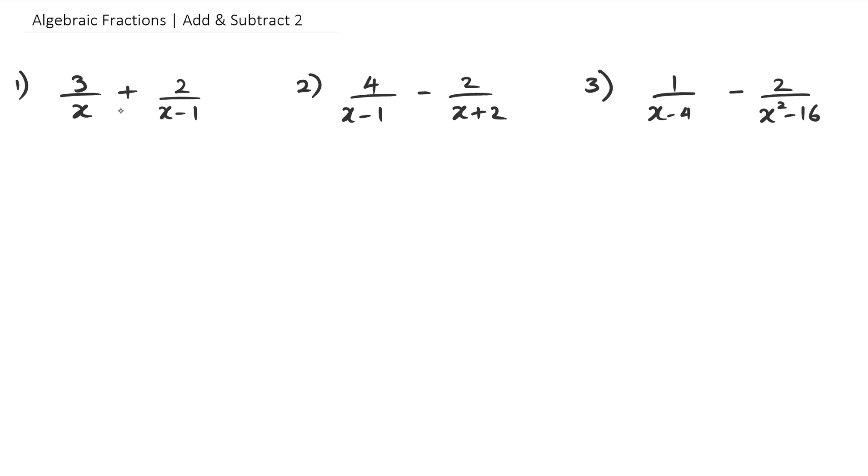So let's get started with question number one here. What we have is we've got 3 over x and 2 over x minus 1. So what I generally tend to do is I write my two numbers together. And because I want to have x minus 1 as a denominator in both fractions, I'm going to multiply the left-hand side in the denominator by x minus 1 and the numerator by x minus 1.